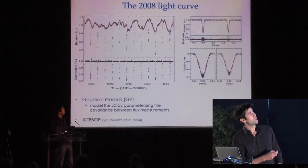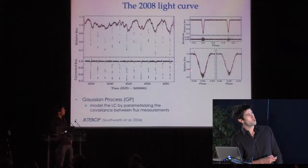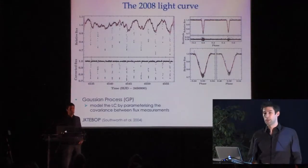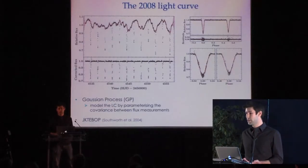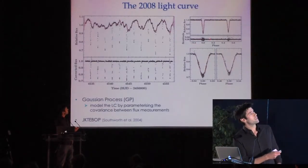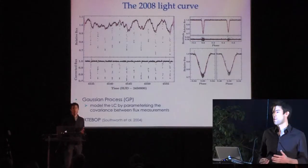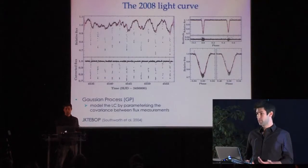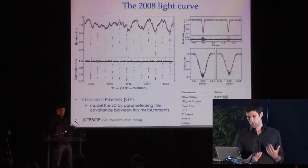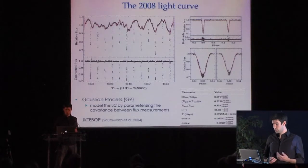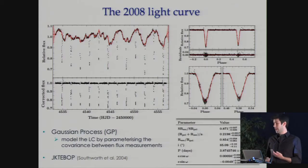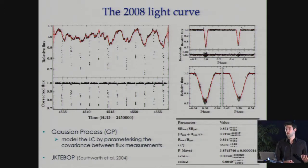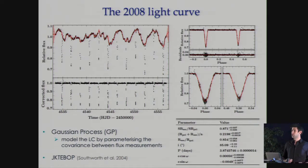Here I'm showing the phase-folded light curve with the JKTBOP model in red, residuals below, and zooms on primary and secondary eclipses. The model is a good fit to the data, but there's increased scatter around the eclipses, primarily due to spots on the background star that are crossed by the foreground star during an eclipse. This analysis gives a wealth of information, but a lot of it is in the form of ratios or combination terms, so you need additional complementary information to solve for the masses and radii.